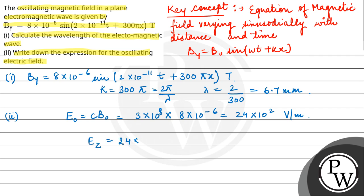Ez = 24 × 10^2 sin(2 × 10^-11 t + 300πx) V/m. This is our final answer. I hope you understood it well, best of luck.